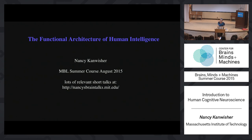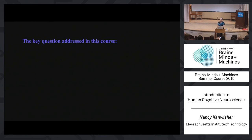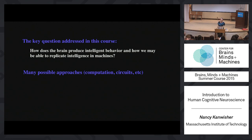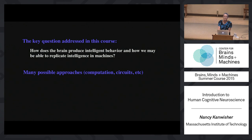It's going to be pretty basic, so if you've heard me speak before, you've probably heard a lot of this. The key question we're trying to address in this course is: how does the brain produce intelligent behavior, and how may we be able to replicate that intelligence in machines? There are a million different ways to go at that question — from a computational angle, a coding perspective, or a fine-grained neural circuit perspective. I'm going to do something in-between, because those are the things we can approach in human brains, and it's really human intelligence we want to understand.